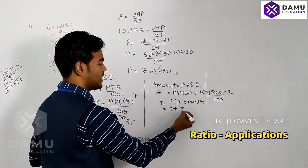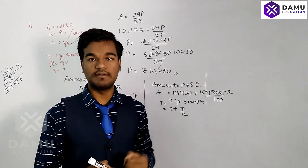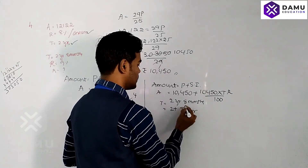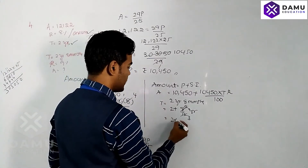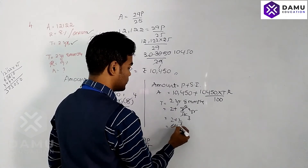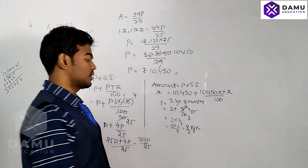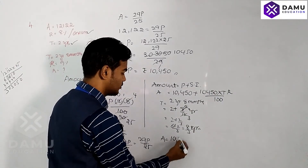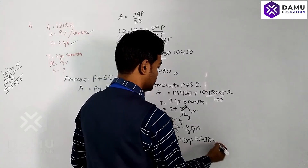Two years and eight months: 8 months = 8/12 = 2/3 years. So total time = 2 + 2/3 = 6/3 + 2/3 = 8/3 years. We substitute this time of 8/3 years into the formula.